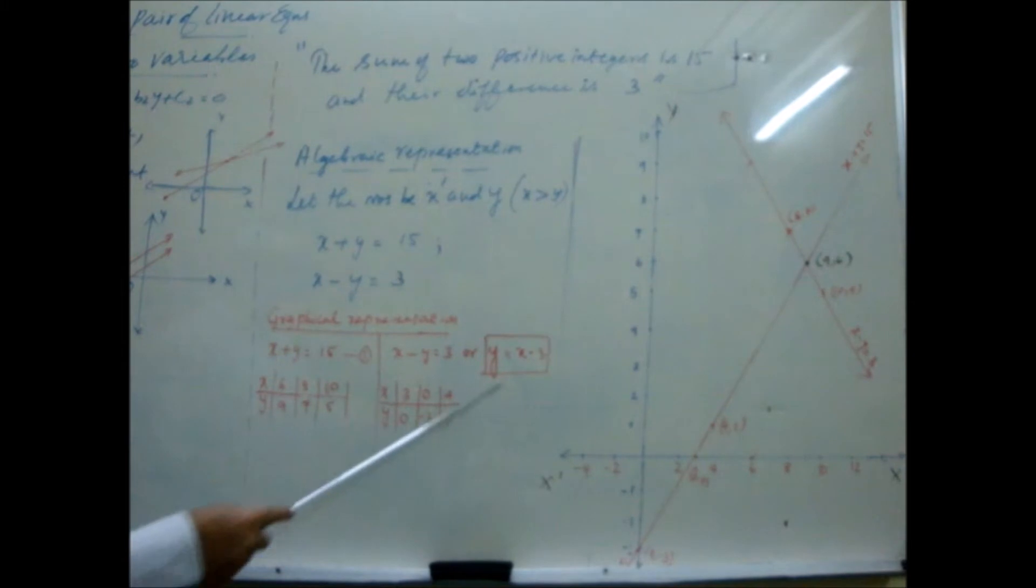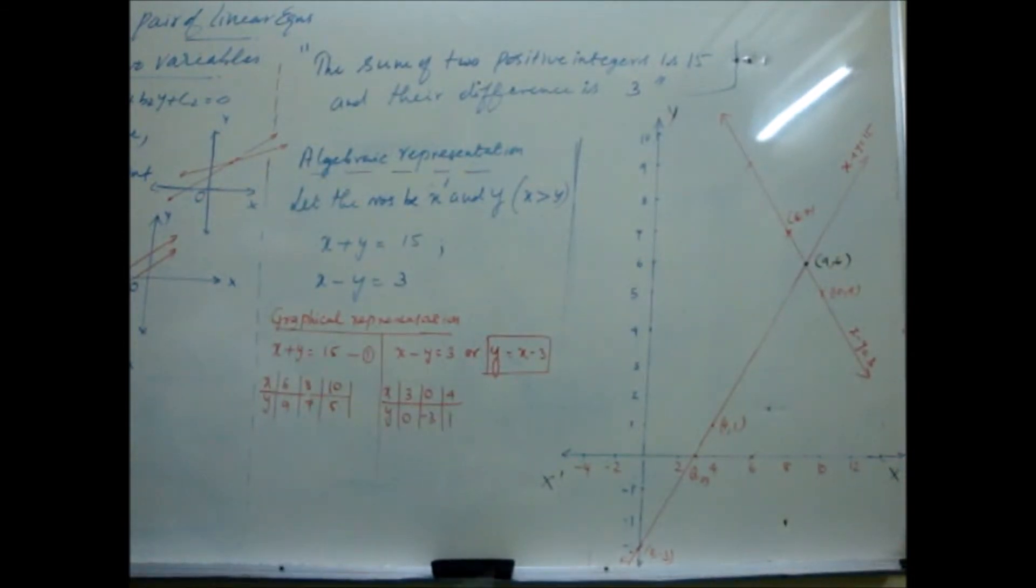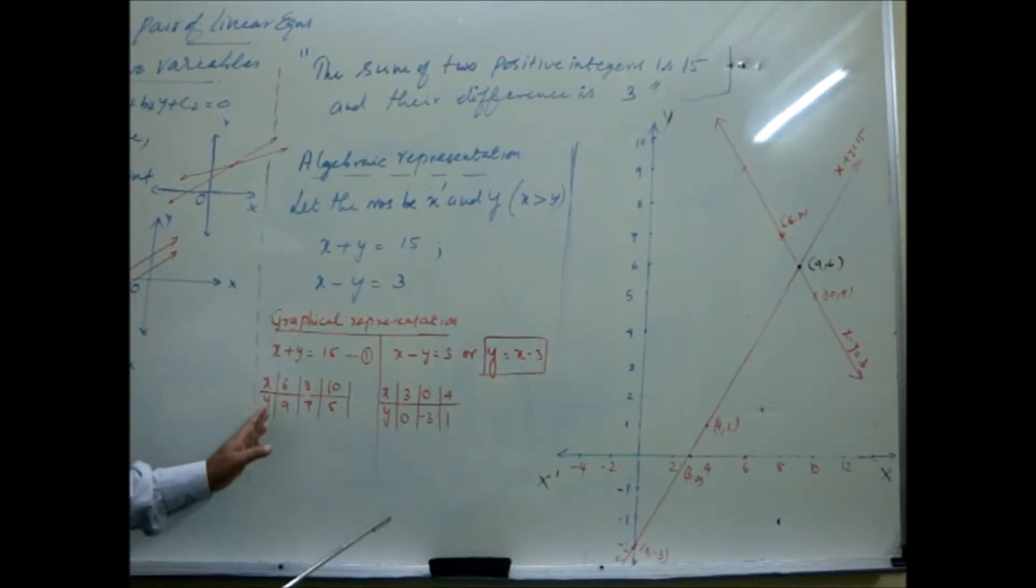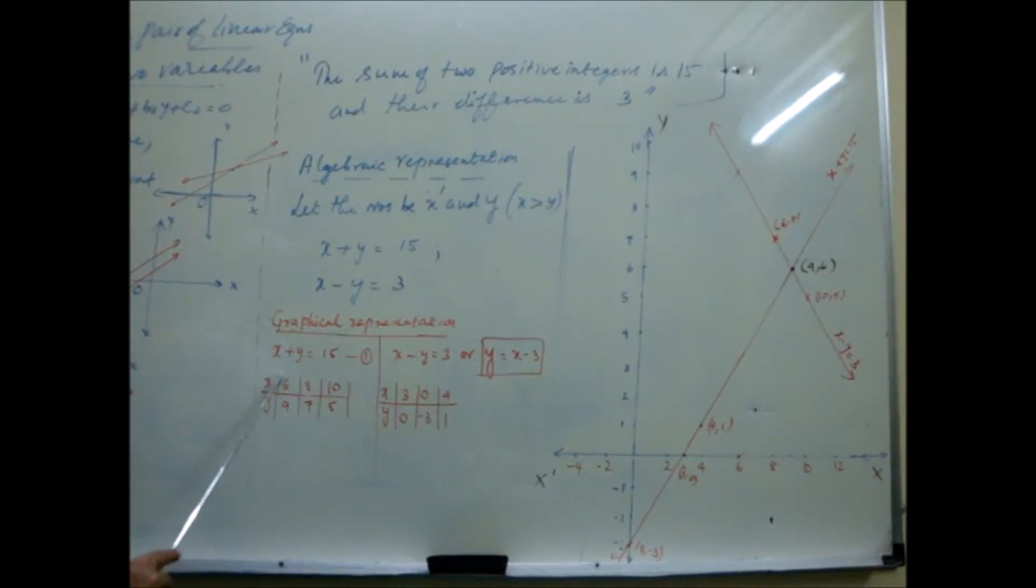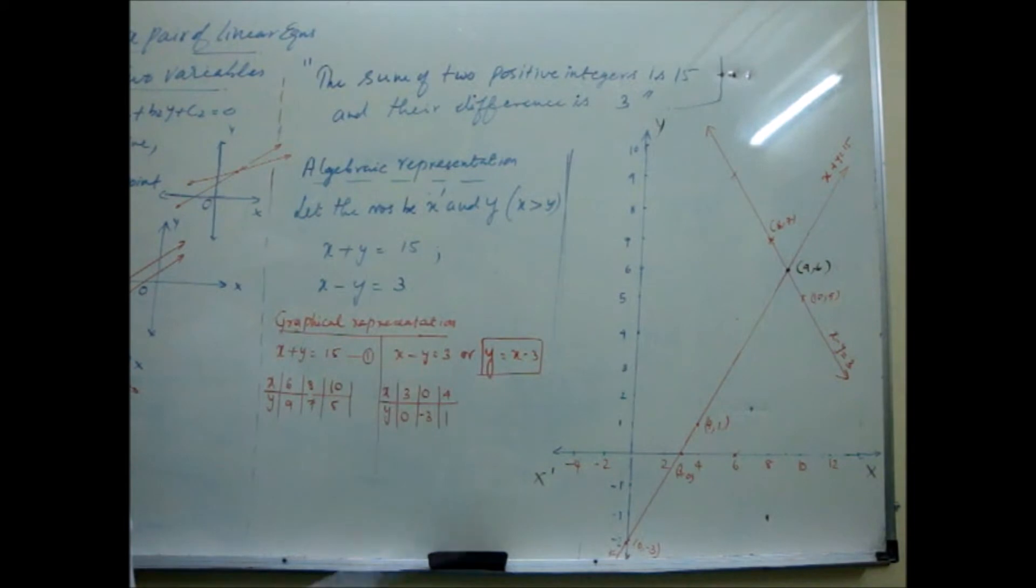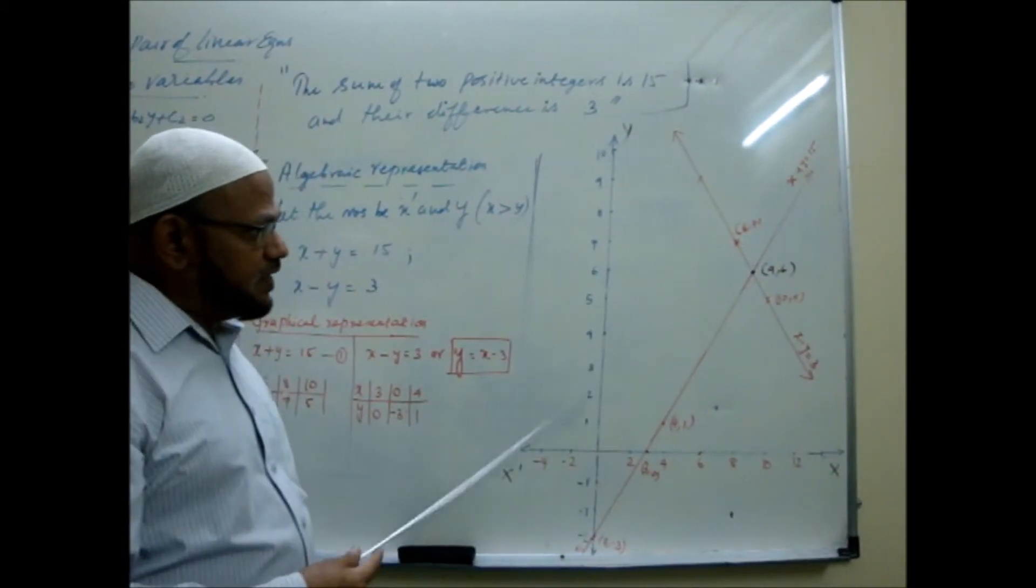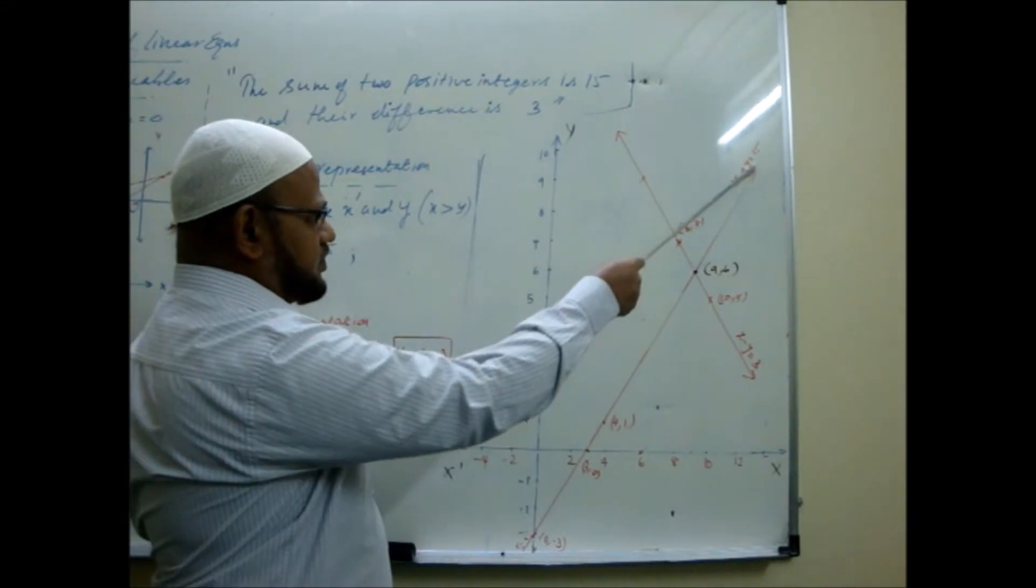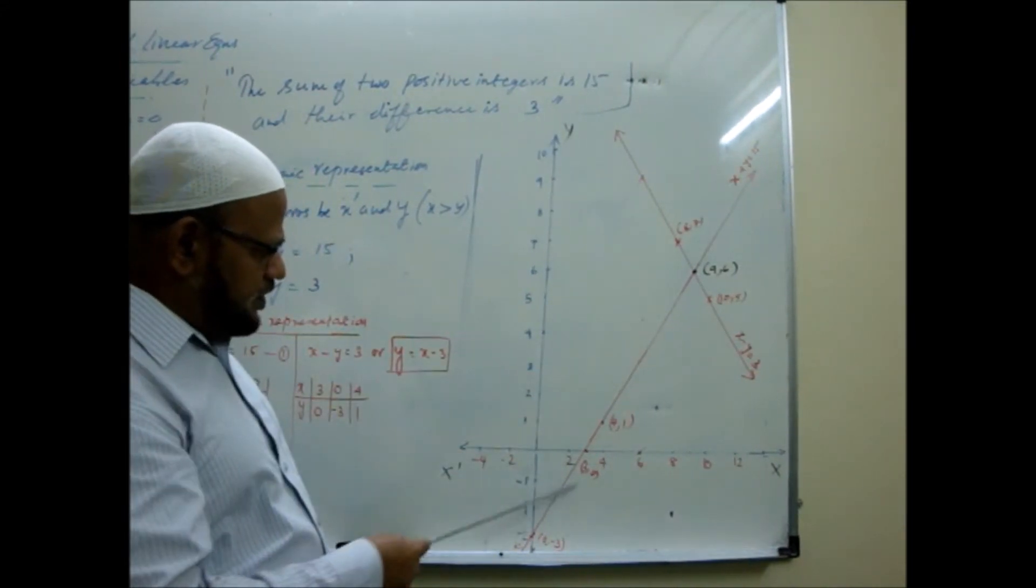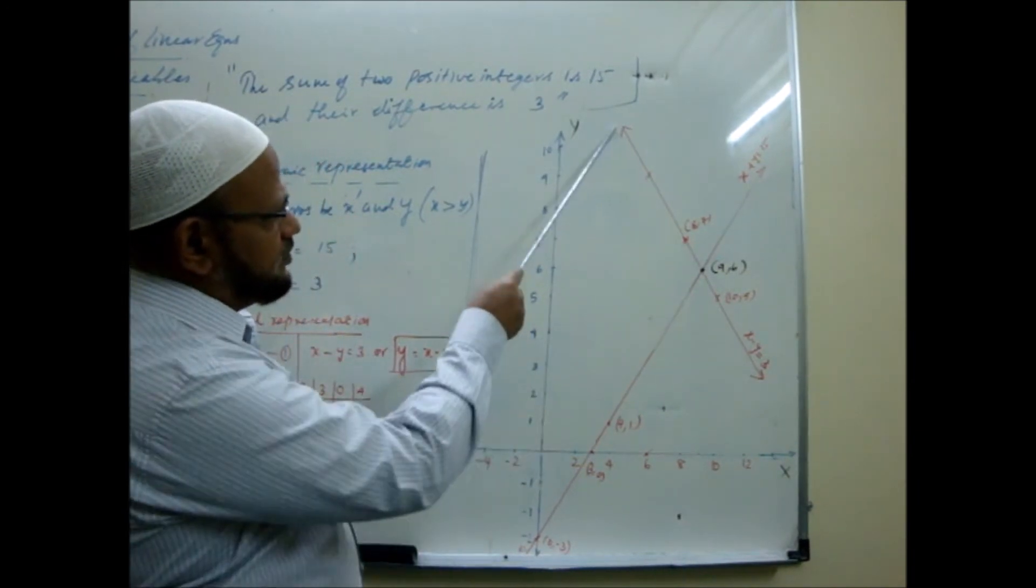Now you plot these points. First plot all these 3 points and draw its line. Then you plot these points and draw the line. Here are the lines drawn on the same graph sheet. So first line is the first line going. I plot the points on it. I got this line.